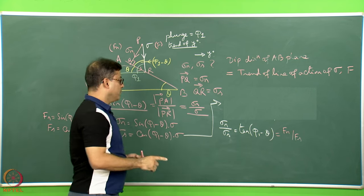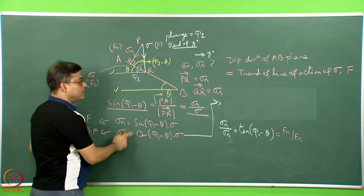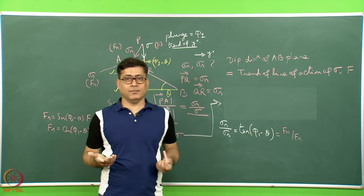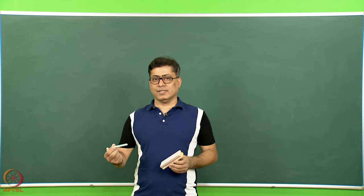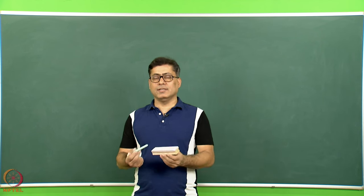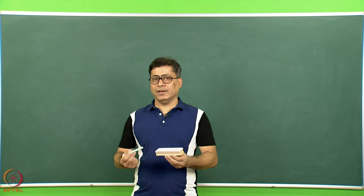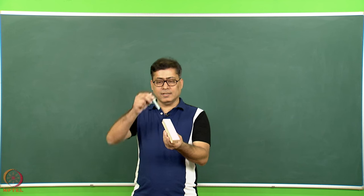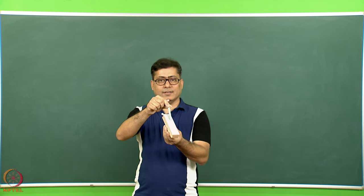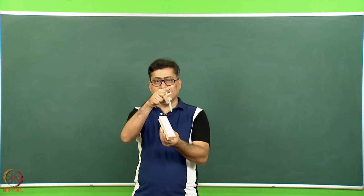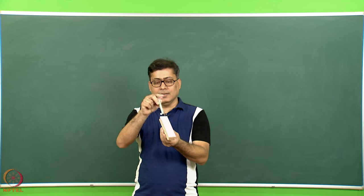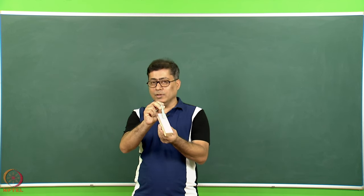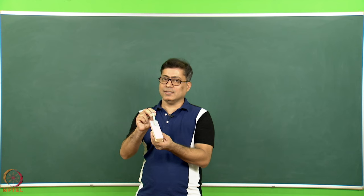Only when that condition is true are these deductions correct. Before going to the next problem, let us look at this in three dimensions. The plane was dipping in a certain direction, the line of action of stress was like that — the green chalk has a trend in that direction and the plane also has its dip in that direction. They are the same; only then those deductions were correct.